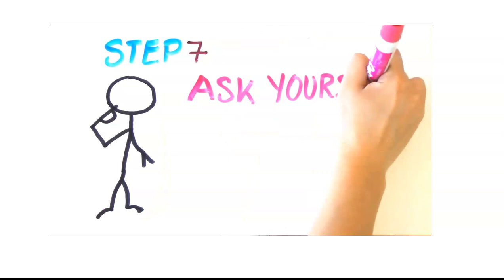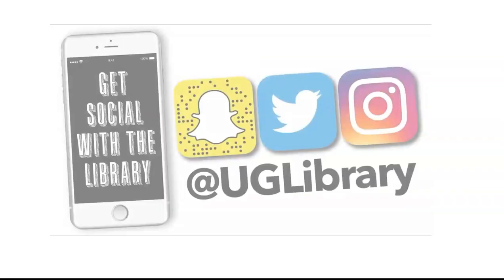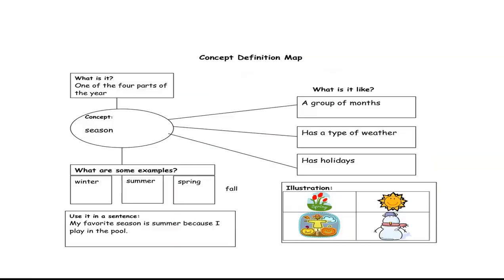Following these 7 steps will allow you to create a concept map to help you study. An elementary example shows the concept 'season' defined as one of the four parts of the year, with examples of winter, summer, spring, and fall, used in a sentence, and illustrated. This can be created quickly on a piece of paper for students to apply what they have learned.